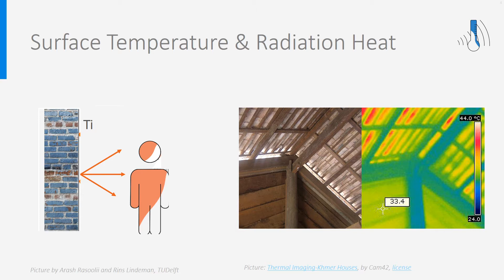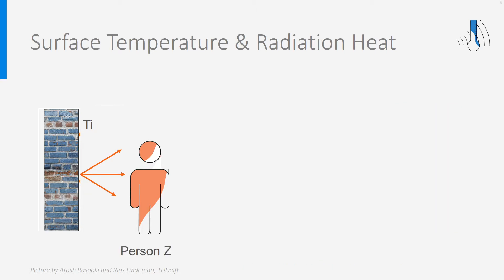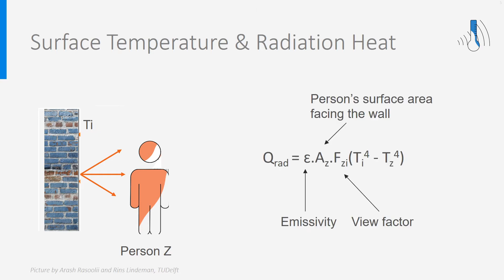The surface temperature of all surrounding surfaces in a room plays a role in comfort perception. Every surface with a temperature above absolute zero — minus 273 degrees Celsius or zero Kelvin — emits radiation, and radiant temperature is just another word for surface temperature. A person Z facing wall I can be described as a surface of area AZ and temperature TZ, TZ being the temperature of the skin or clothing. AZ is the part of the body surface area seeing the wall. The radiation heat transfer between the wall and the person depends on their temperature difference to the power of 4, times AZ, times the emissivity epsilon, times the view factor FZi.